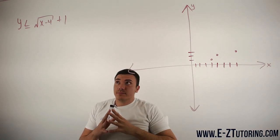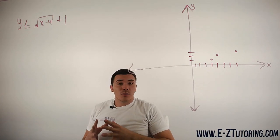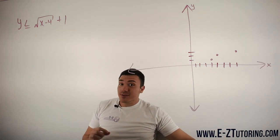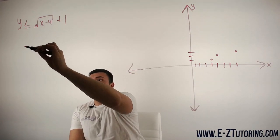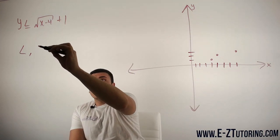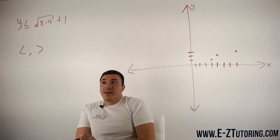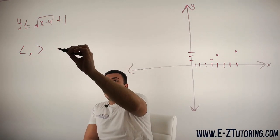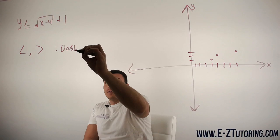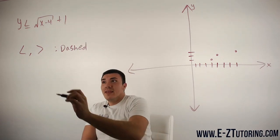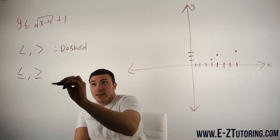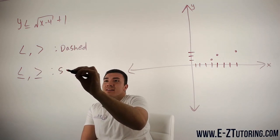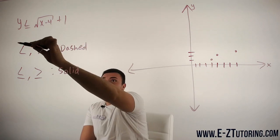For square root inequalities, what you want to do is first look at the sign. If the sign is less than or greater than, then you are going to have a dashed line. If your sign is less than or equal to or greater than or equal to, then you are going to have a solid line.